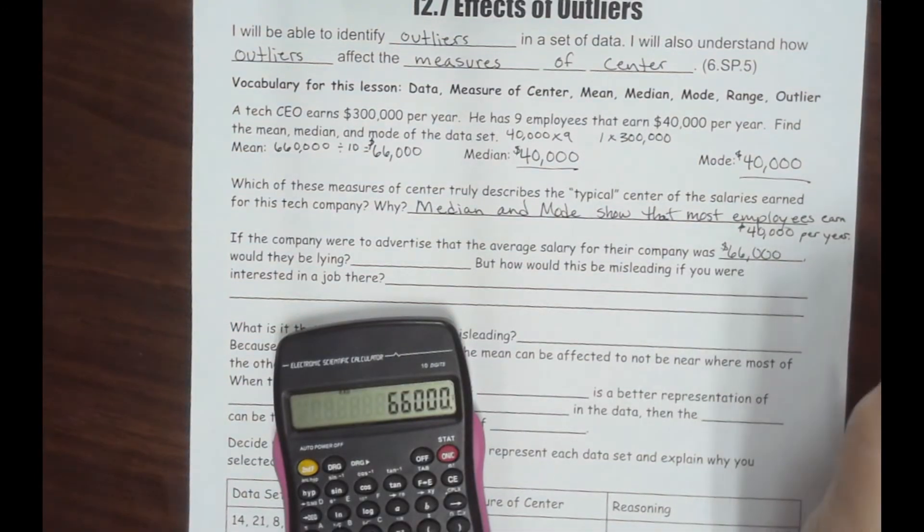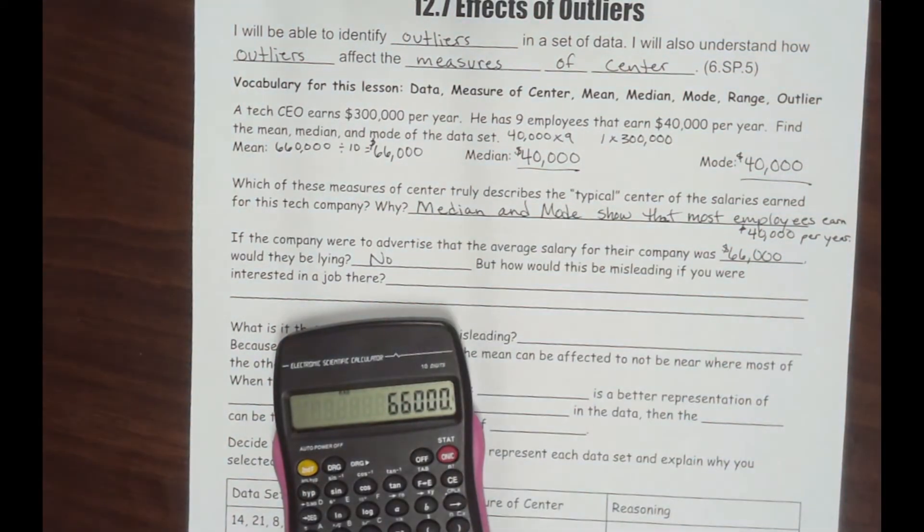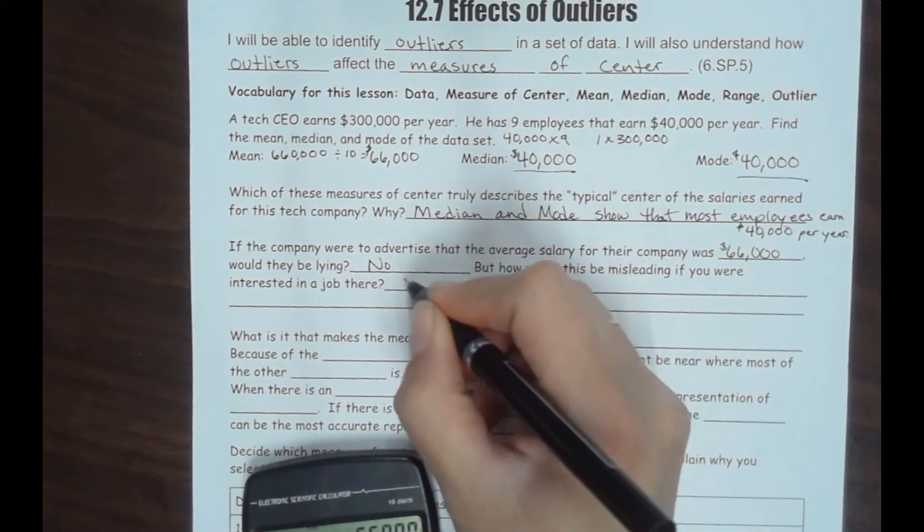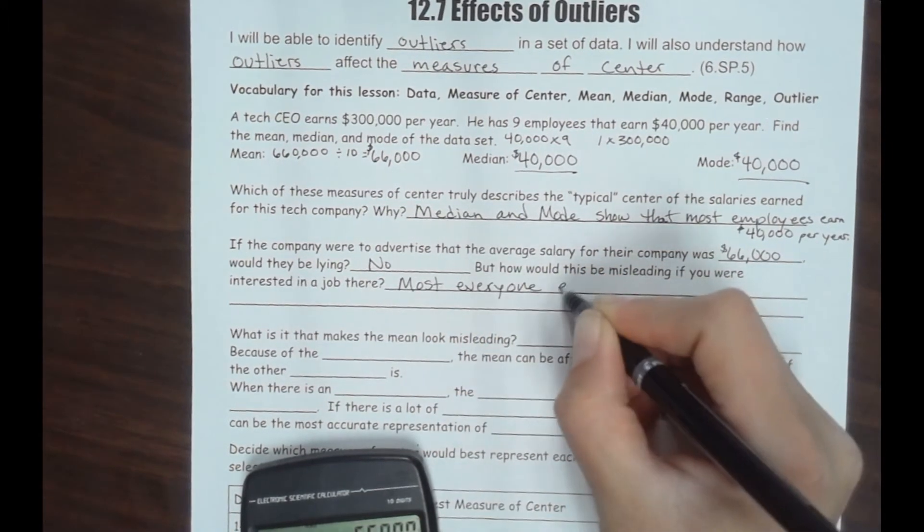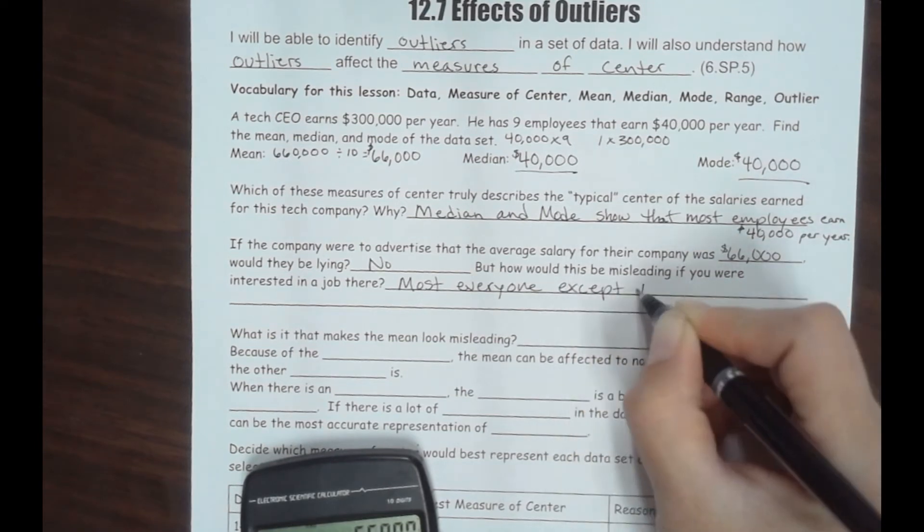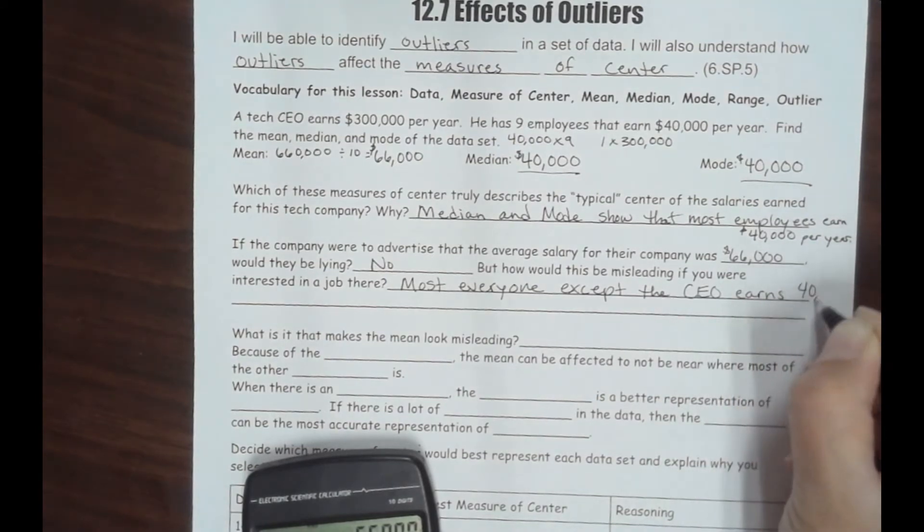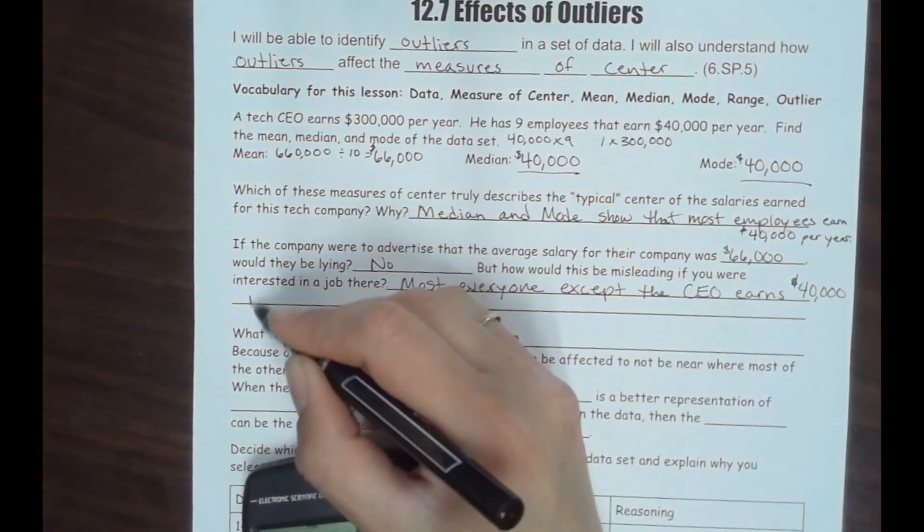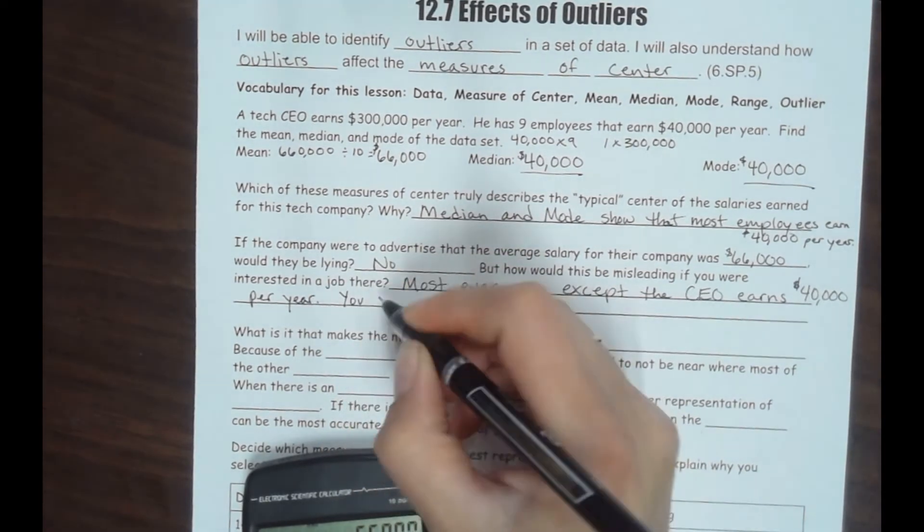So if this company were to advertise that the average salary for the company was $66,000, are they technically lying? No, they're not lying, that was the average. But how would this be misleading if you were interested in a job there? Aren't you thinking that you're going to go in and earn about $66,000 a year if that's the average? How would this be misleading? Most everyone except the CEO earns $40,000 a year. You might think you would get $66,000 a year.